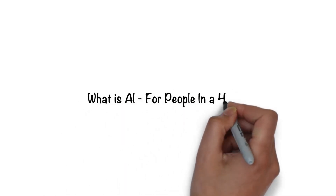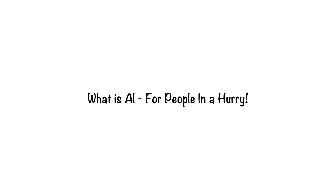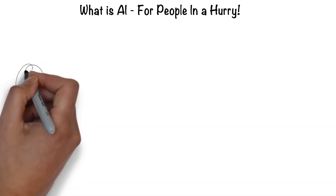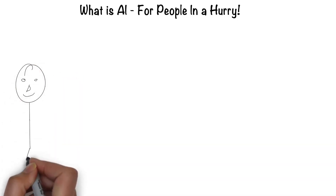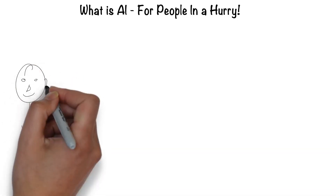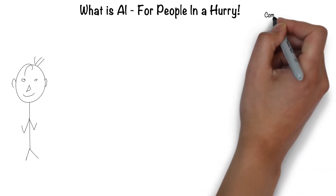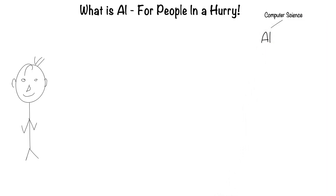Artificial intelligence for people in a hurry. The easiest way to think about artificial intelligence is in the context of a human. After all, humans are the most intelligent creatures we know of. AI is a broad branch of computer science, and the goal of AI is to create systems that can function intelligently and independently.